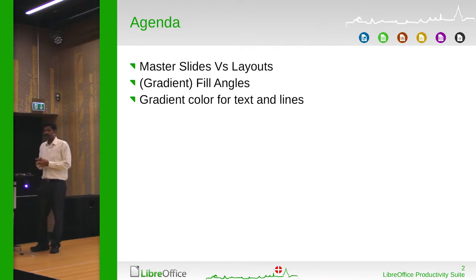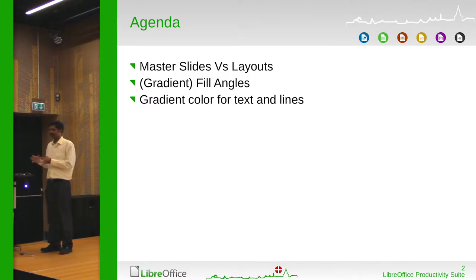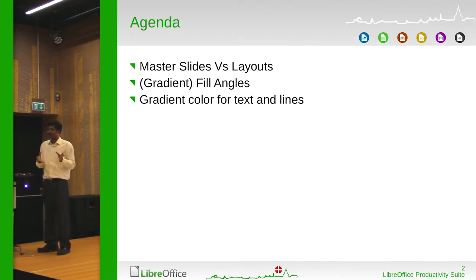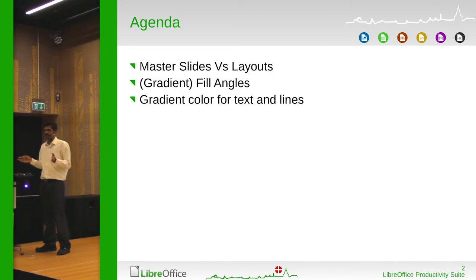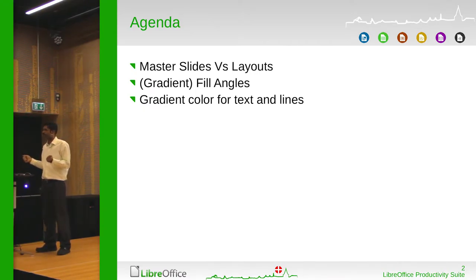These are the three things I'd like to cover. One is master slides versus layers — a lot of people have faced troubles with layouts. When you get a PPTX or PPT from PowerPoint, you import and try exporting, and your layouts go anywhere. We will see why that happens and what we could do about it. And the fill angles — specifically gradient fill angles — and missing features like gradient fills for text or for lines. People use workarounds like using an image of a line and dragging it across, but it's not a very elegant solution.